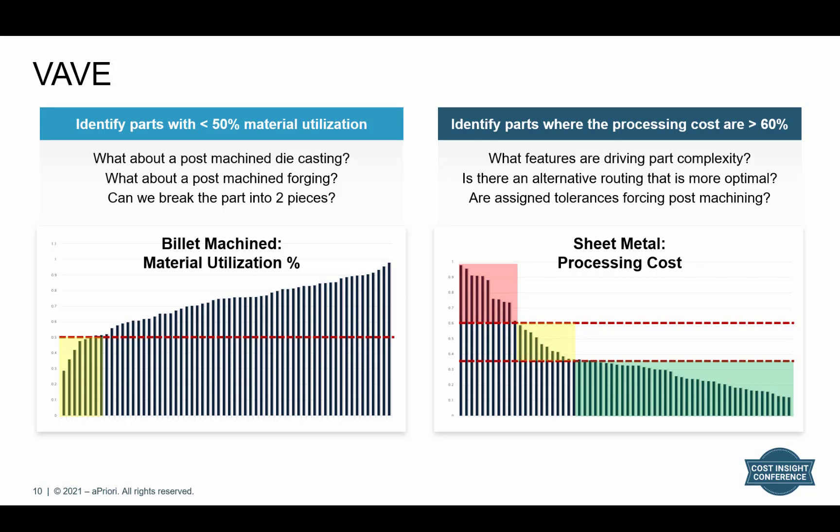In the example on the right, an engineer leveraged bulk costing similarly — where aPriori scanned hundreds or thousands of sheet metal components within a business, trying to identify parts where processing costs exceed 60%. When working with sheet metal components, material should always be the primary cost driver, so components where that's not the case are quickly flagged. It's usually an indicator of tight tolerances driving machining, or complex geometry such as forms requiring hard tooling. Leveraging bulk costing allows the user to scan products mechanistically and jump right to the outliers with the most bottom-line cost-saving impact.